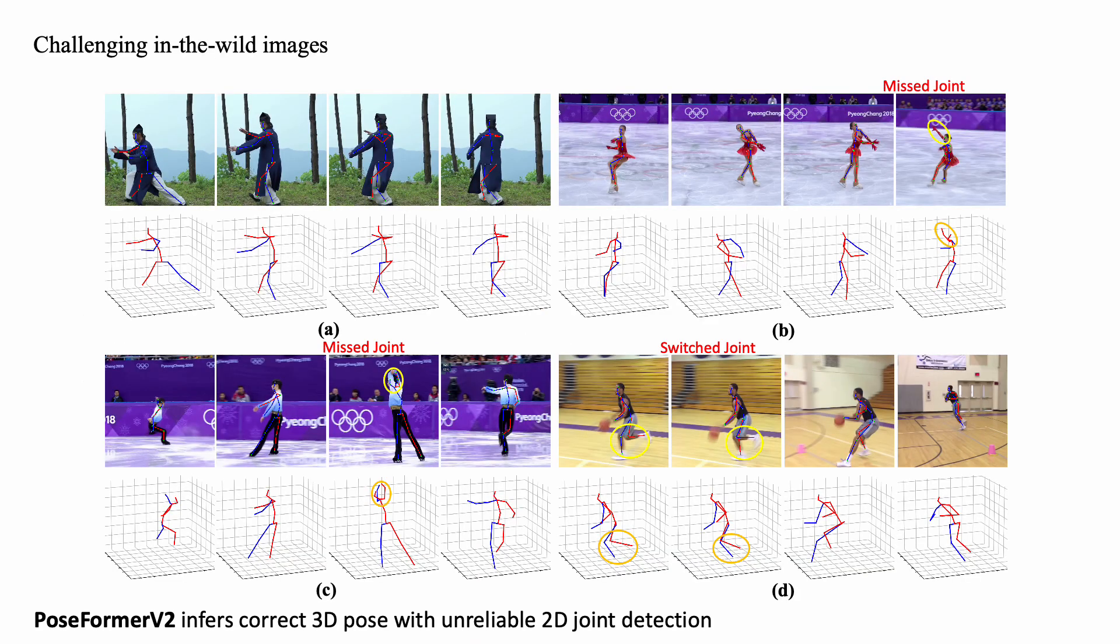Here are some qualitative results. PoseFormer V2 infers correct 3D pose with unreliable 2D joint detection as input. For example, some input joints are missed or switched.